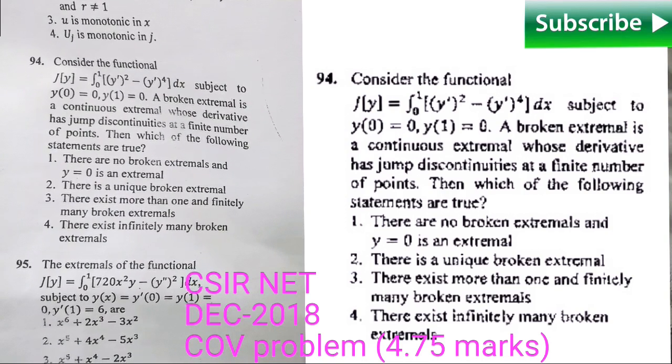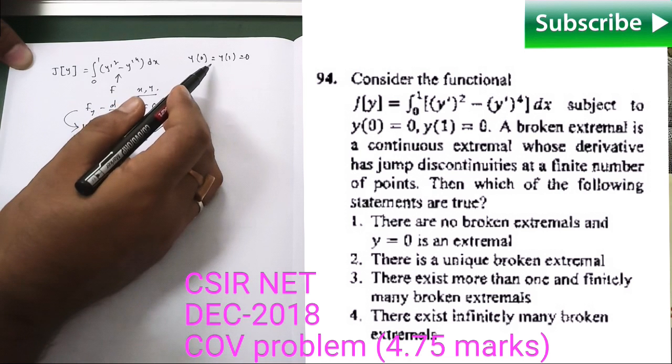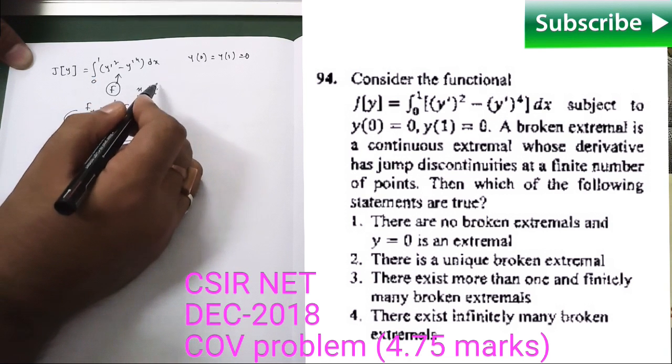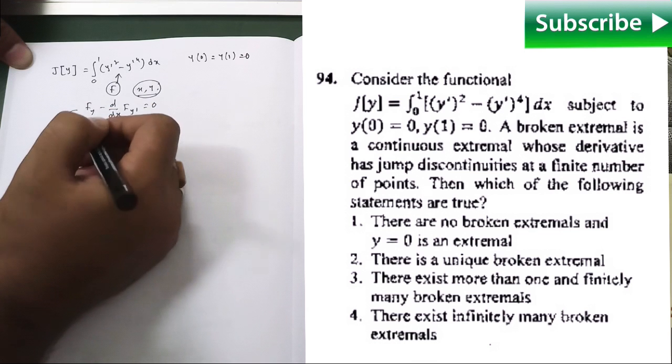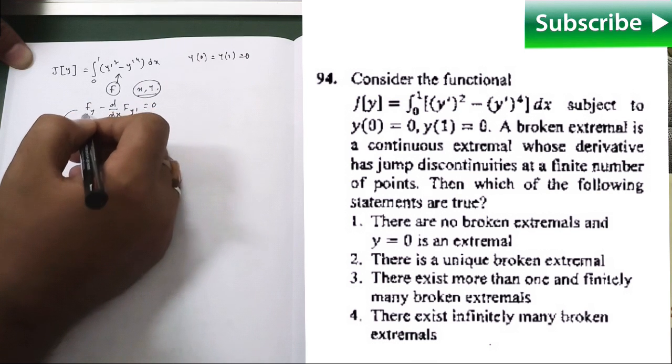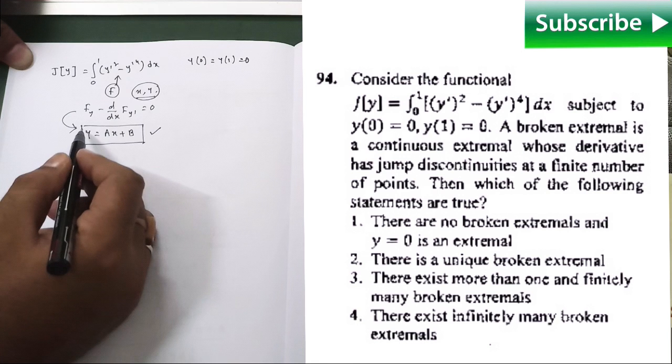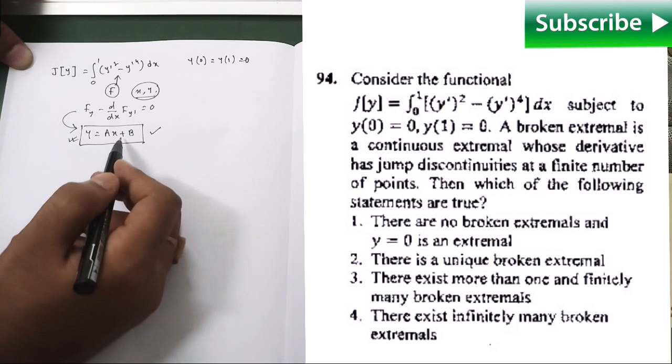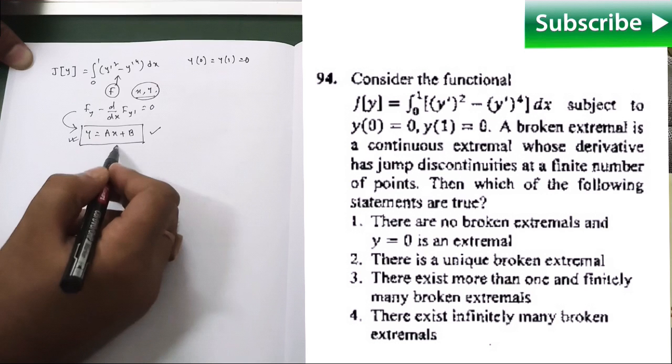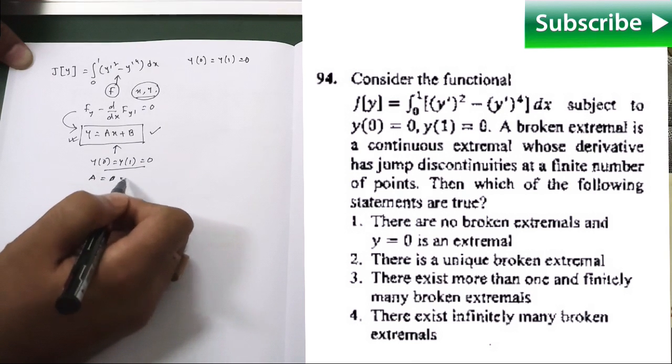So let us try to solve this question. This is the given functional along with these two boundary conditions. Look at your functional f, it is independent of x and y, it is only a function of y dash. In such cases, if we implement our Euler-Lagrange equation, then this equation will give us a family of straight lines y equals ax plus b, which are our admissible curves. And if we use our boundary conditions y(0) = 0 and y(1) = 0, these two conditions will give us a equals b equals 0.